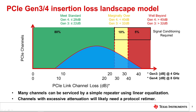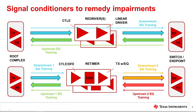This reduction in high-frequency components makes signal recovery more challenging at the PCIe receiver. A redriver's CTLE and linear drive functions work together to reconstruct and pass analog-transmit waveform characteristics onto the system RX. This analog-only approach allows the system host and endpoint devices to communicate directly in a single link training process.